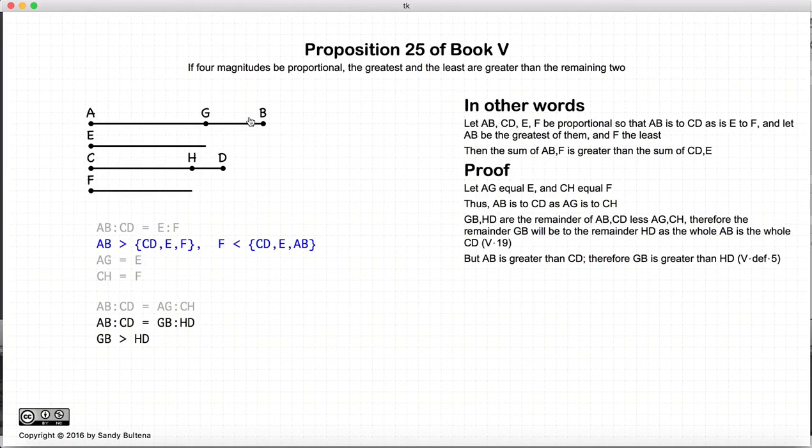Now since AB is greater than CD, the line segment GB will be larger than HD according to the definition of relationships for ratios, definition number five describing what a ratio is.